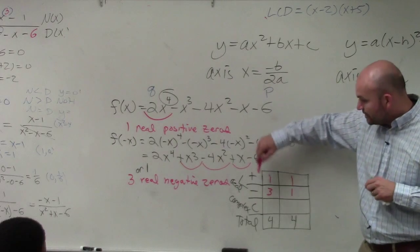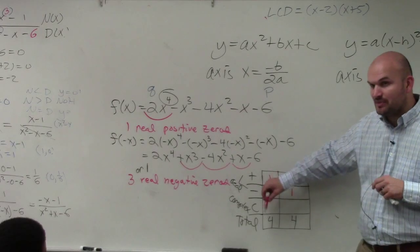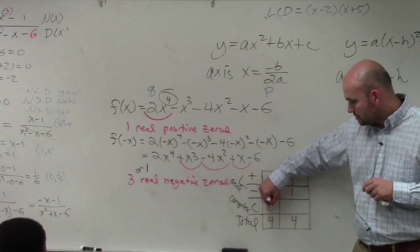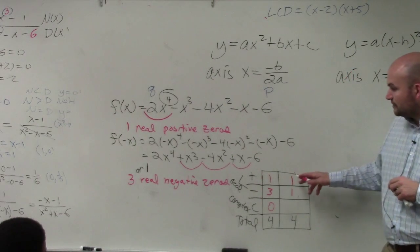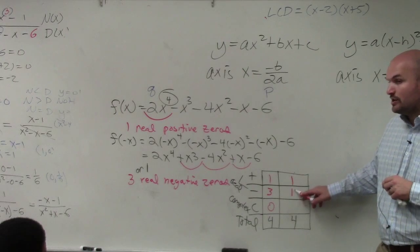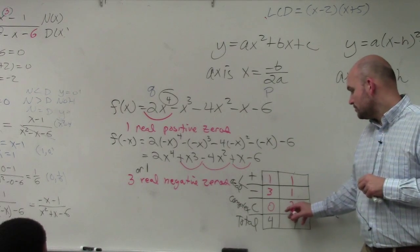So if there's one real, three negative reals, how many complex? Zero. If there's one real positive, one real negative, how many complex? Two.